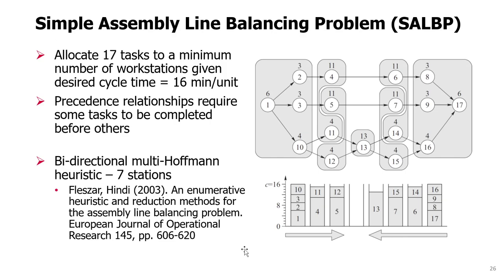Now, my own work from 2003, we created a bidirectional heuristic, applying the Hoffman heuristic from 1963 bidirectionally multiple times, and this kind of heuristic can create solutions that are sometimes better in terms of saving one or more stations.